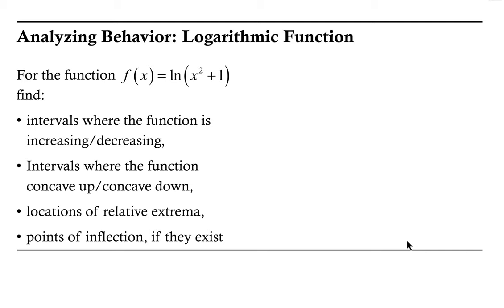Looking at this function, we're taking the natural log of the quantity x squared plus 1. Typically, the domain of the natural log function has a domain of only positive values. But notice that instead of x as our argument, we have x squared plus 1. If I evaluate this at 0, I get 1, which is a perfectly valid input. If x is negative, when I square it, that input value becomes positive and then adds 1, so that will certainly be greater than 0.